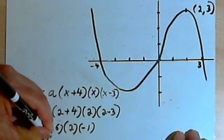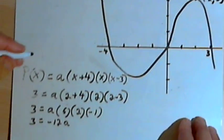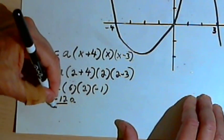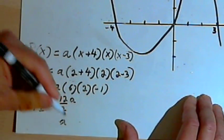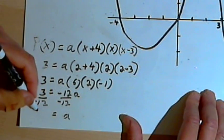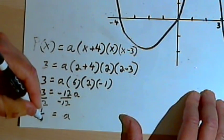So 3 equals negative 12a. I'll multiply both sides by negative 12. And that means that a is going to equal negative one-quarter.